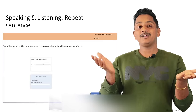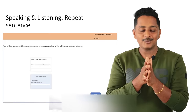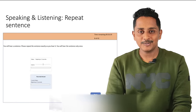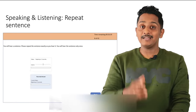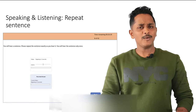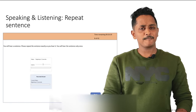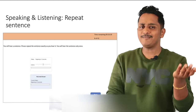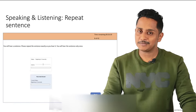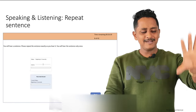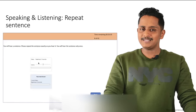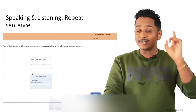Repeat sentence contributes marks to your speaking at one end and listening at the other. If 10 questions come, that's 30 marks to speaking and 30 marks to listening — 60 marks overall. If 12 questions appear, then 35 to 36 marks to speaking and 35 to 36 marks to listening.